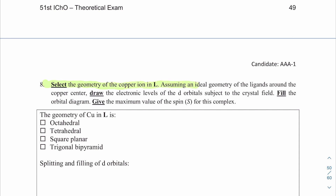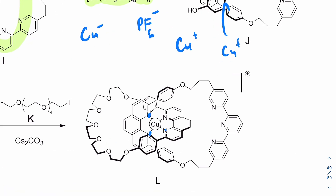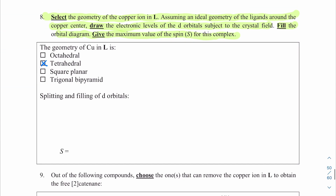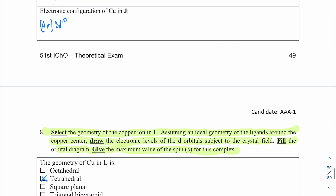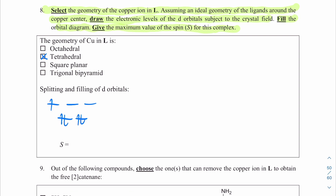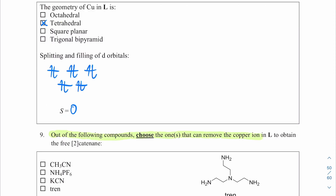Question eight: select the geometry of copper in L. There are four nitrogens approximately equally spaced around the copper, so the geometry is tetrahedral. In tetrahedral crystal field splitting, there are three degenerate orbitals on top and two on the bottom. The configuration in J is 3d¹⁰ — ten electrons — completely filling all d orbitals. Since there are no half-filled orbitals, the maximum spin S is zero.